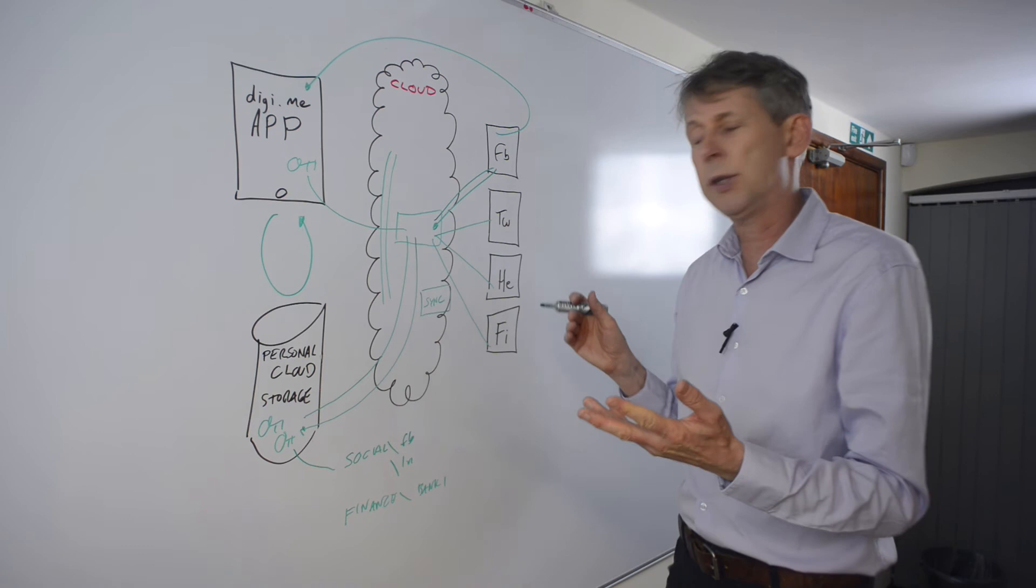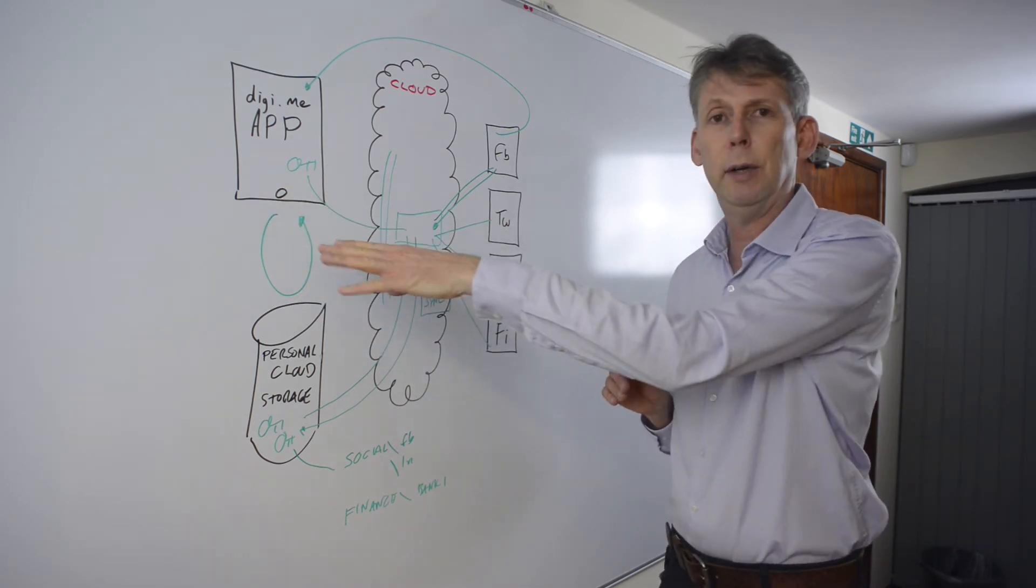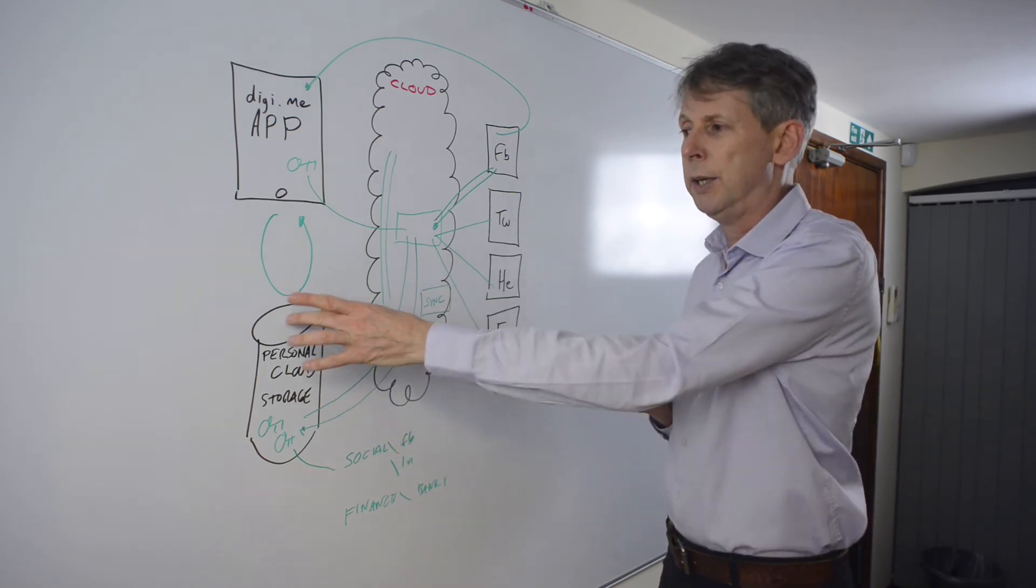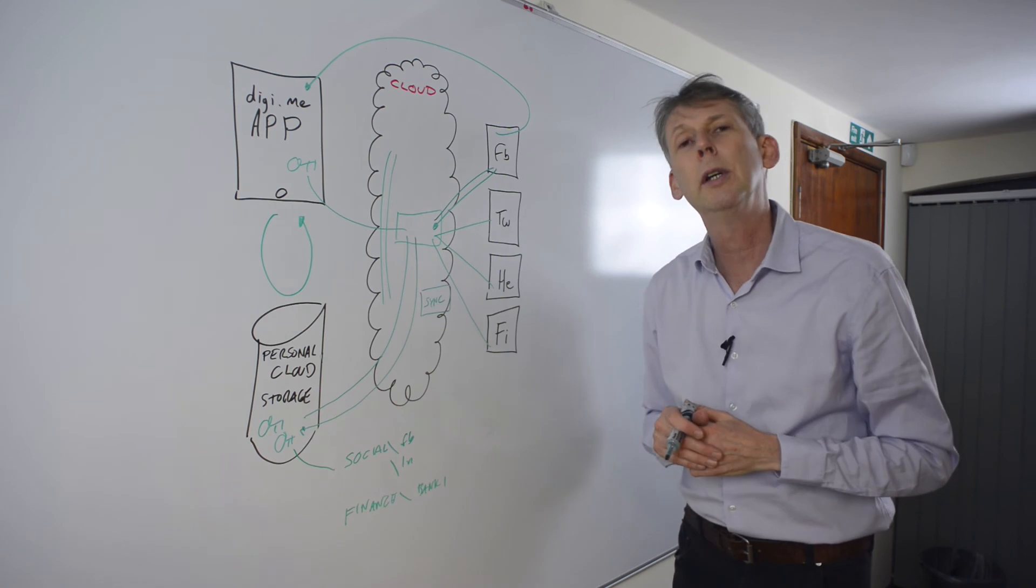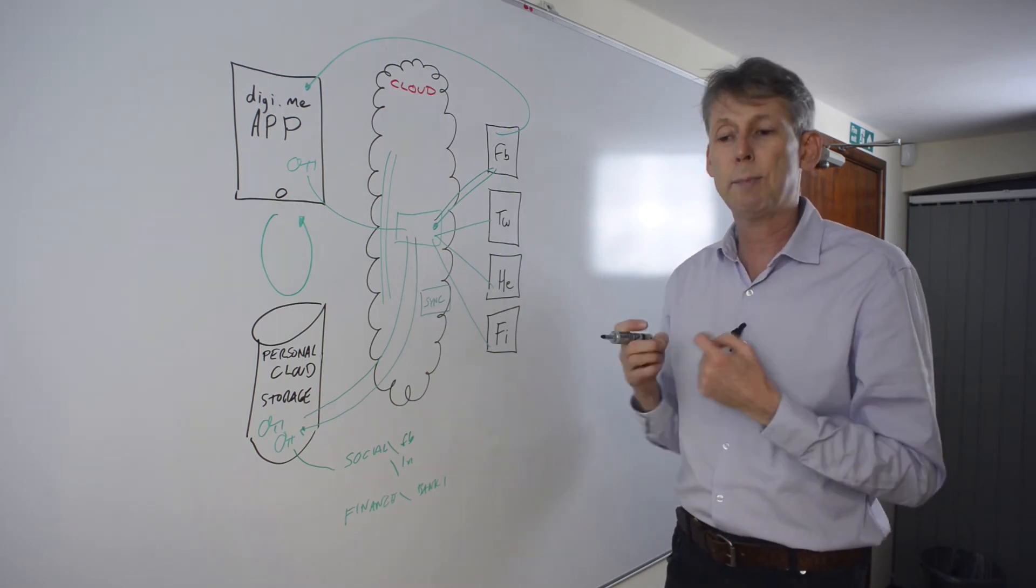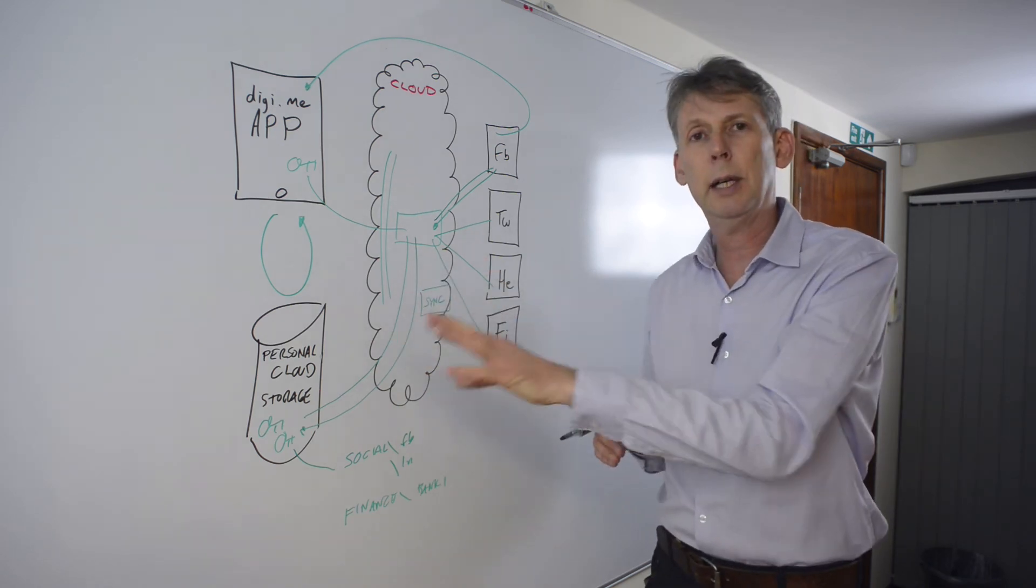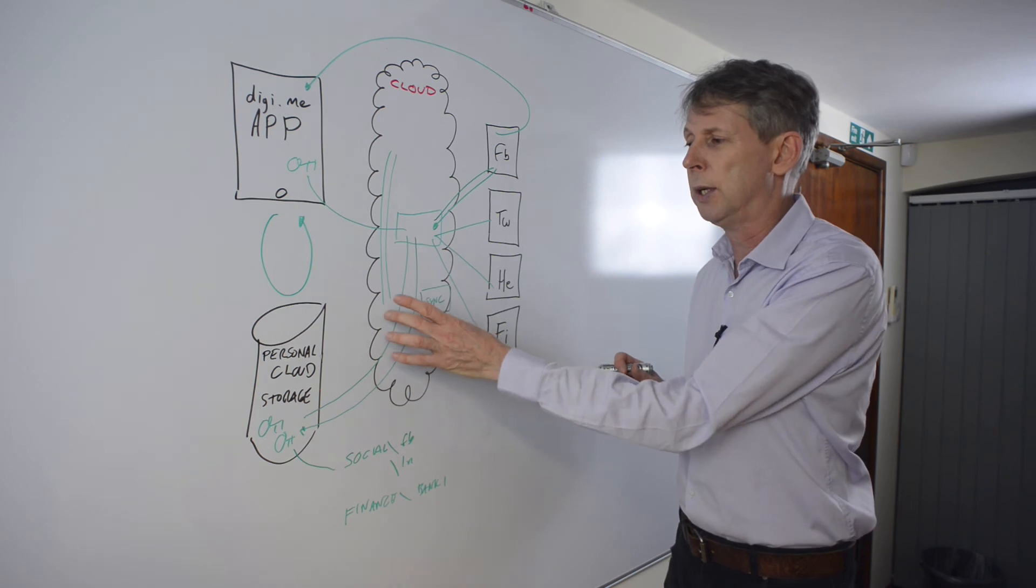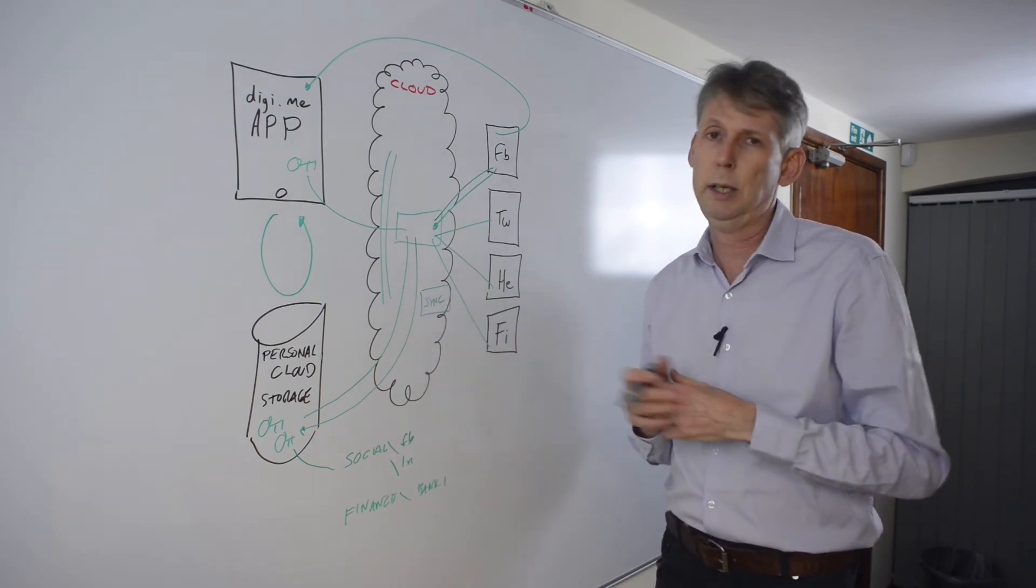But what we'd like to establish here is the three core principles. That the user when they see their data is running our app on their phone so they're in control. The data that they see and they manage on their app is from their own personal storage. So from a GDPR and a general regulation perspective it's very important to demonstrate that the user now owns their data and is in control of it. And all that DigiMe is doing within its cloud service is providing a proxy processing function for that user.